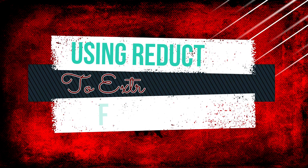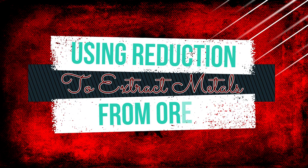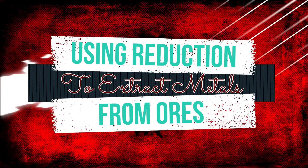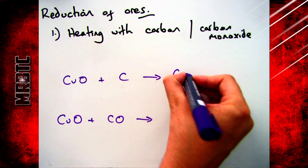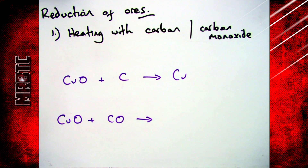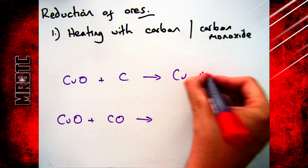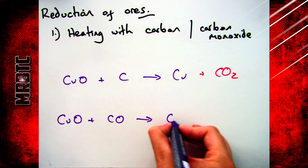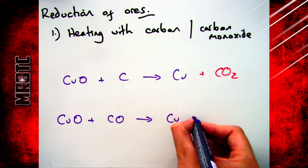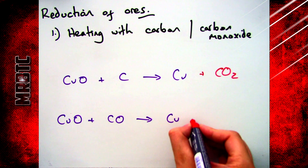Welcome to this video looking at how you can use reduction to extract metals from the ground. There are two ways that you can reduce ores. The first is heating with either carbon or carbon monoxide. Here I've got copper oxide, and if I heat it and react it with carbon or carbon monoxide I get similar products. I'm going to reduce my copper oxide and turn it into copper, and I'm going to oxidise my carbon turning it into carbon dioxide.